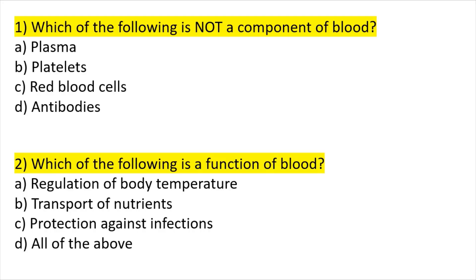Question one: which of the following is not a component of blood plasma? Plasma makes up 55 percent of blood. Platelets and red blood cells are part of the packed cell volume. The answer here is antibodies — antibodies is not a component of blood plasma.